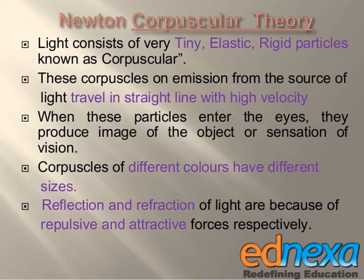Newton suggested that light consists of very tiny elastic rigid particles known as corpuscles. These corpuscles, on emission from a source of light, travel in straight lines with high velocity. When these particles enter the eyes, they produce images of the object or sensation of vision. Corpuscles of different colors are of different sizes, and reflection and refraction of light are because of repulsive and attractive forces.